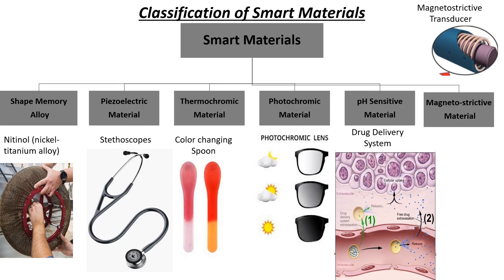There are many other types of smart materials, for example electrochromic materials, self-healing polymers, hydrogels, thermoresponsive polymers, carbon nanotubes, and conductive polymers. There are many more smart materials. That's it for today — thank you.